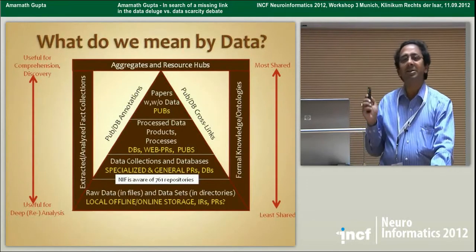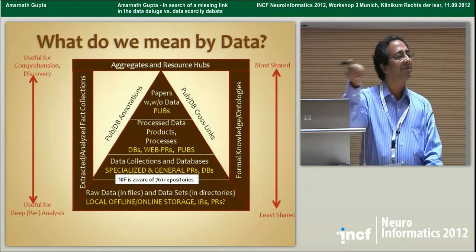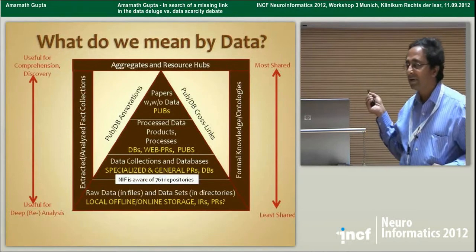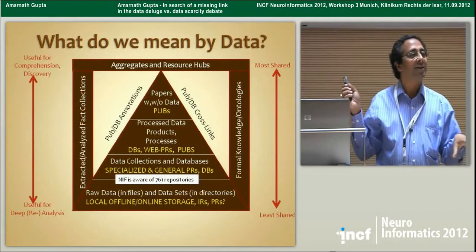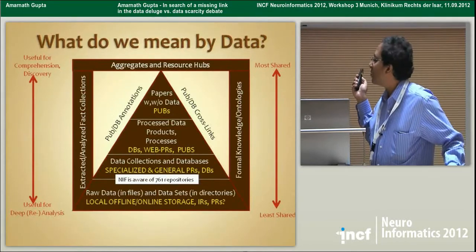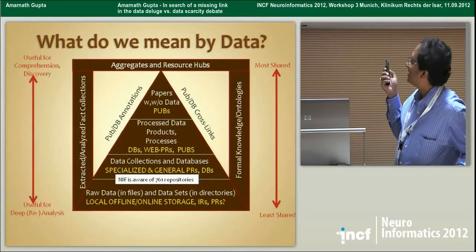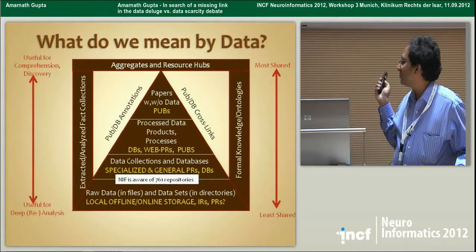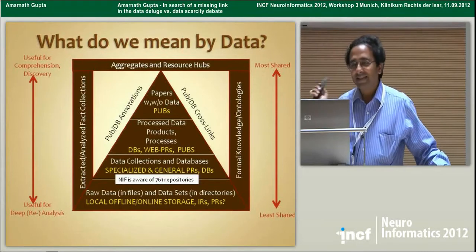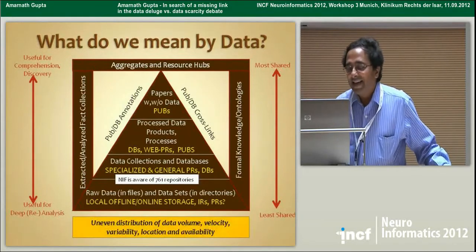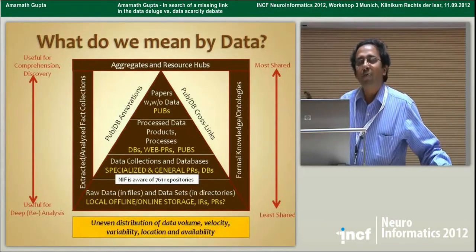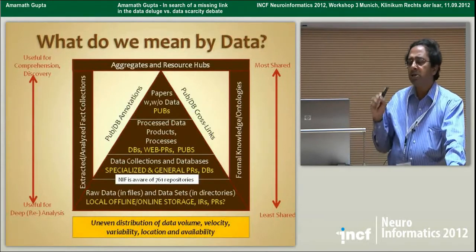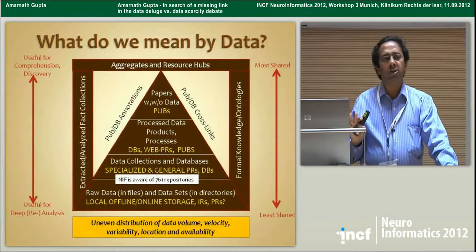Did you know how many repositories there are of life science-type data? NIF knows about 761 so far. I didn't even know there are so many repositories. And surely they do not cross-reference each other. That's just a factoid. The point I wanted to make is, if you look at all the data that's there, there's a really uneven distribution.